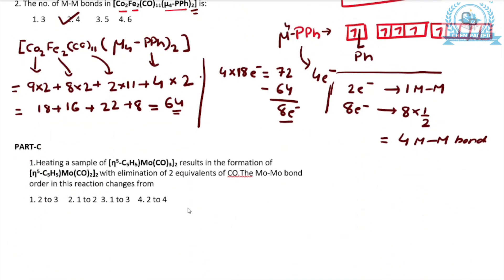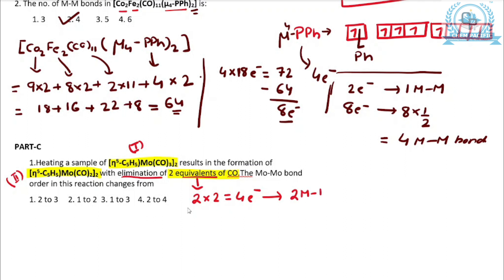Heating a sample of this complex results in the formation of this new complex with the elimination of 2 equivalents of CO. The metal-metal bond order in this reaction changes from one value to another. With the elimination of 2 equivalents of CO, since CO is a 2-electron donor, 2 equivalents means 4 electrons are eliminated. If both complex 1 and complex 2 satisfy 18 electrons, then those 4 electrons can be replaced by 2 metal-metal bonds.